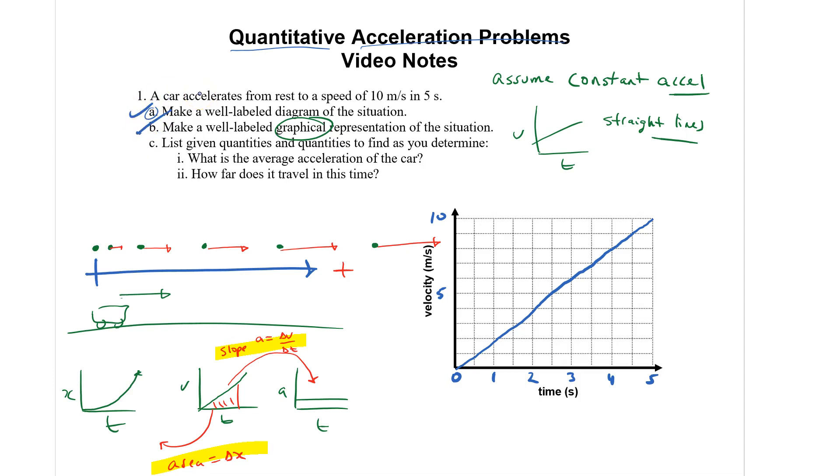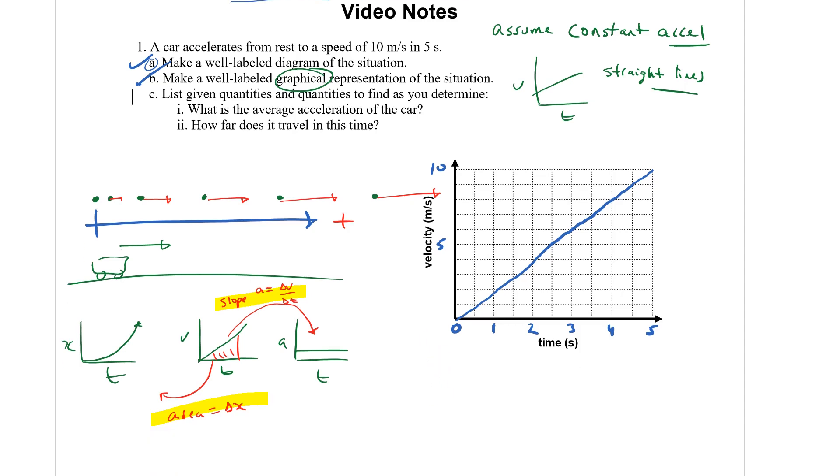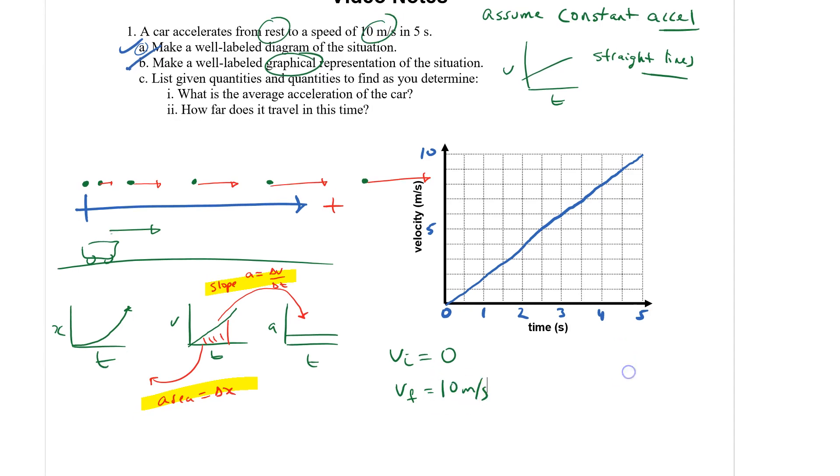List given quantities and quantities to find as you determine. So I'm going to tell you when you get to that part, there's five. There's five things. There's the initial velocity, which starts from rest. So that's going to be zero. There's the final velocity. That we know. 10 meters per second. There's how much time went by. So the change in time from the beginning to the end is five seconds.